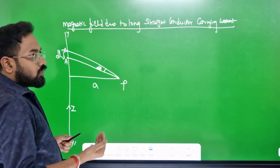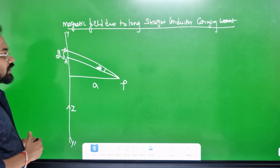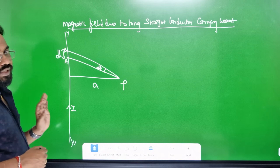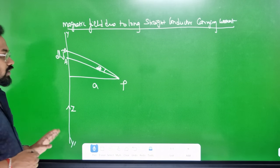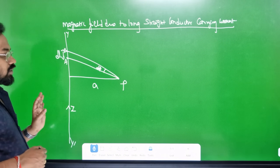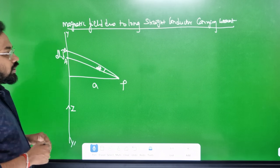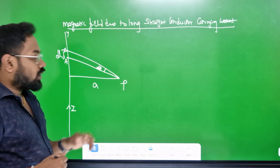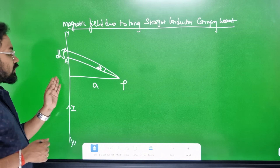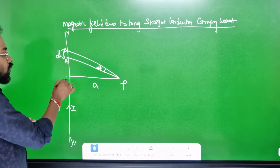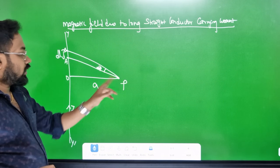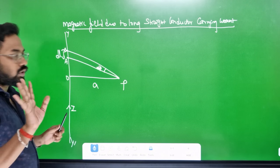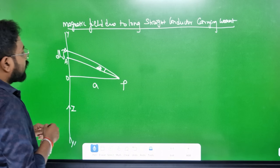Let's consider a long straight conductor with constant current I. Y' is the long conductor carrying constant current I. P is a point where the magnetic field is produced. A is the distance from O to P.